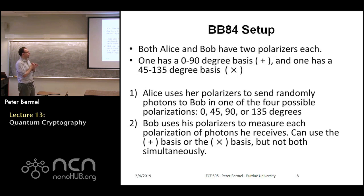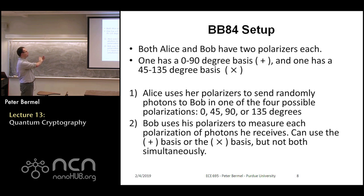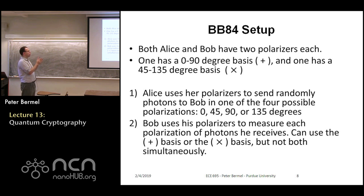Just to briefly step through the BB84 setup: the idea is you have a set of photons being exchanged between Alice and Bob. There are two bases for the polarizations — they could be either 0 and 90 degrees, or 45 and 135 degrees. Alice sends random photons using one of the four possible polarizations: 0, 45, 90, and 135. Bob uses his polarizers to measure those polarizations, and he may be using either basis. That means in general they may not agree on every exchange, but they should agree on about half, because each of them has two possibilities — four total between Alice and Bob, of which two are plus-plus and cross-cross, which you can actually use.